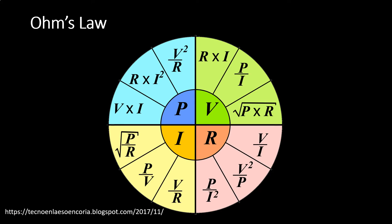The way the circle works, as a review, you look in the center of the circle for the unit or the value that you are solving the equation for. P is power, V is voltage, I is current, and R is resistance. And then you look around the outside of the circle in the quadrant for the unit you're solving, and look for the two items that are given.